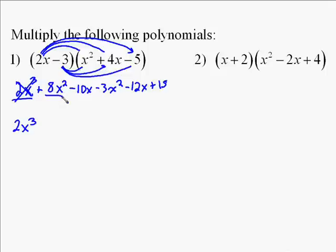Now we look at the x squared. Are there other x squareds? There's an 8x squared and a negative 3x squared. 8x squared minus 3x squared gives us a positive 5x squared. I like to cross it out after I've done it just to make sure I know I've taken care of all the terms.